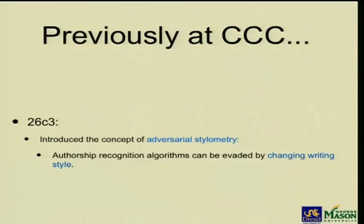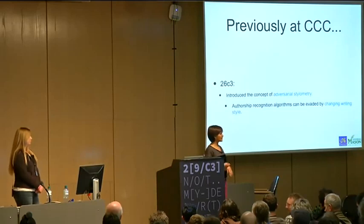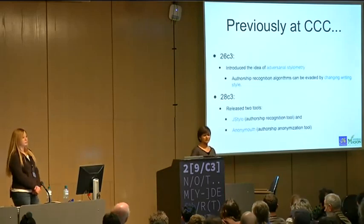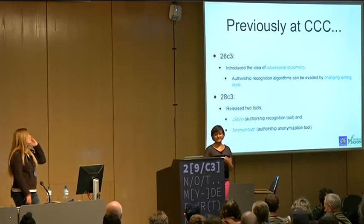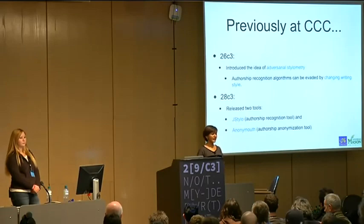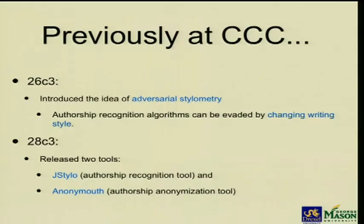This is our third talk at CCC. In the first talk at 2063, we introduced the concept of adversarial stylometry, which shows that if you change your writing style, authorship recognition algorithms won't be able to recognize you as the author of a document. Last year at CCC we presented two tools: J-Stylo and Anonymouth. J-Stylo is the authorship recognition tool, and Anonymouth is the authorship anonymization tool that uses J-Stylo to analyze text and provide user-specific suggestions to change your writing style. Both tools are available on our website and are open source.